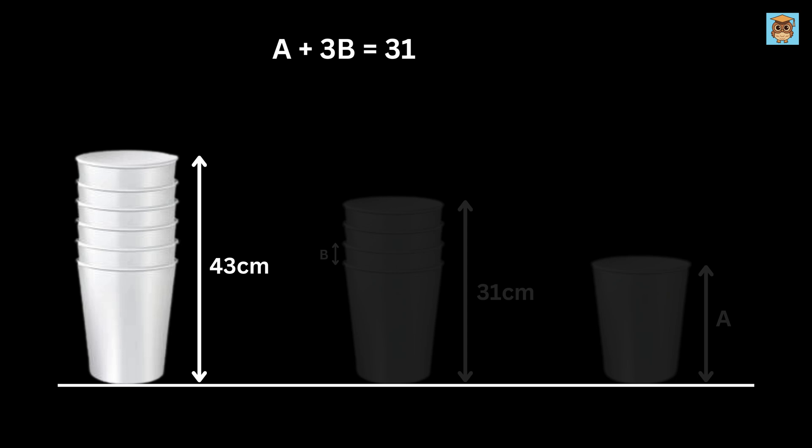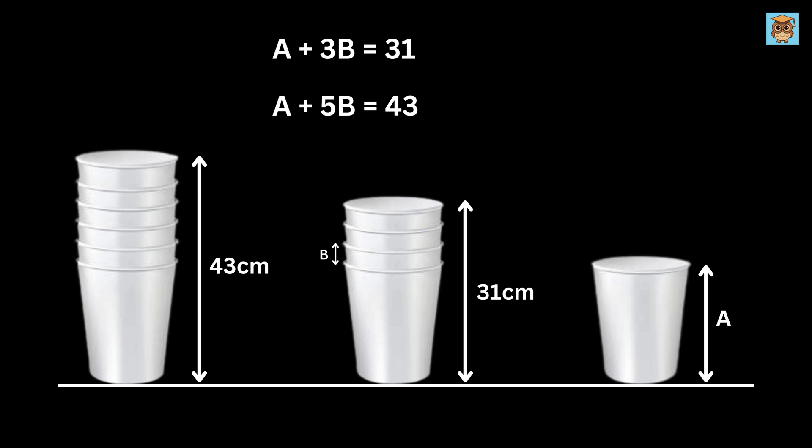Now let us do the same for this part. This is A and we have one, two, three, four, and five partially visible glasses of height B, which makes this height as A plus five times B. But this height is equal to 43 centimeters, right? So we get A plus five times B equals 43.